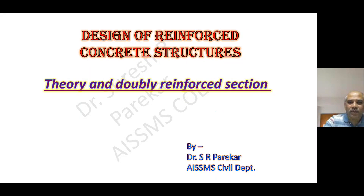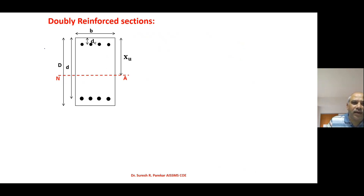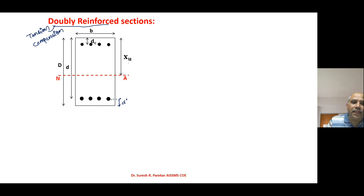Good evening. Today we are going to do the second video for revision, covering theory and problems of doubly reinforced sections. In a doubly reinforced section, we have steel on the tension side as well as on the compression side. We denote the neutral axis depth as xu, the effective cover of steel on the compression side as dc (d dash), and we are interested in finding the moment of resistance.